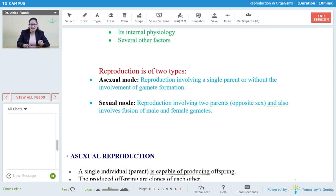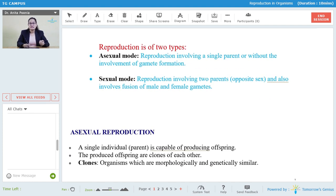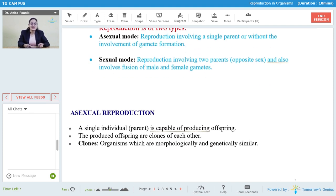So what is asexual reproduction? In asexual reproduction, a single individual, that is the parent, is capable of producing offspring. The produced offspring are clones of each other, wherein those organisms are morphologically and genetically similar to the parent. Now let us also study the different types of asexual reproduction with respect to different examples.